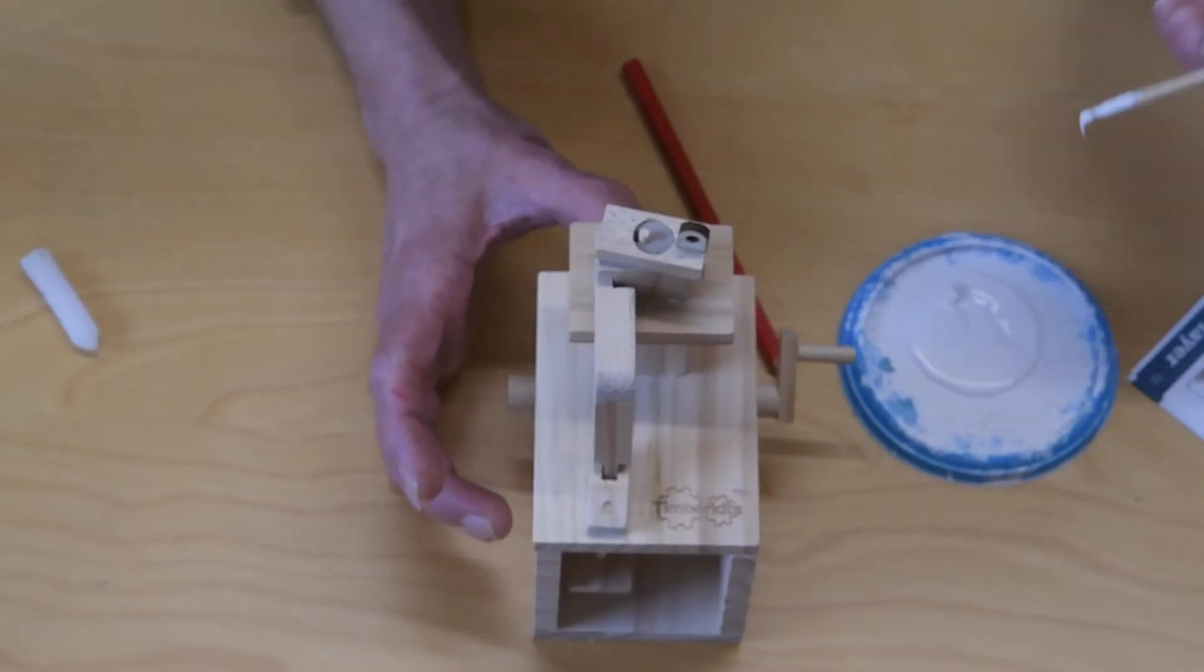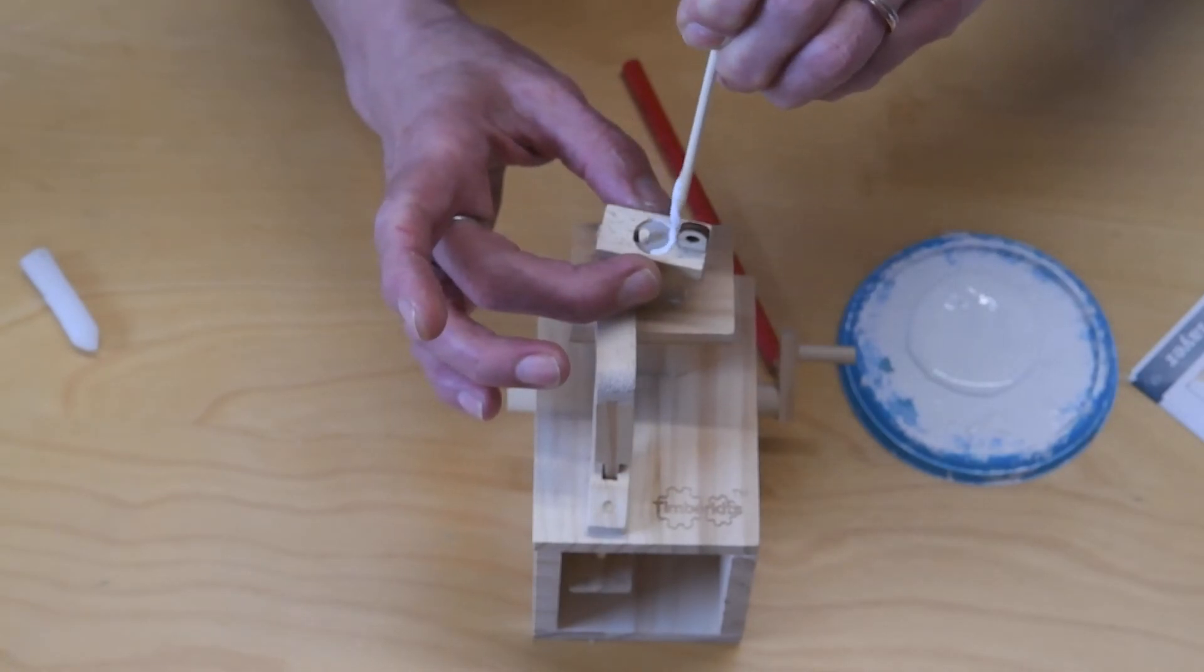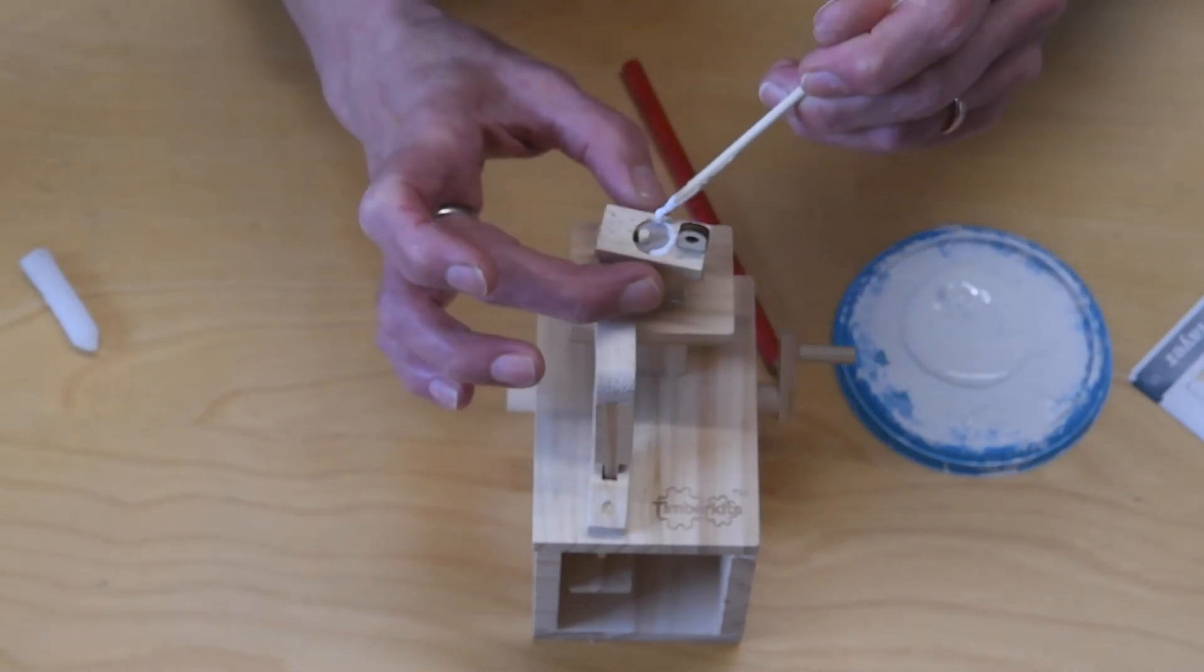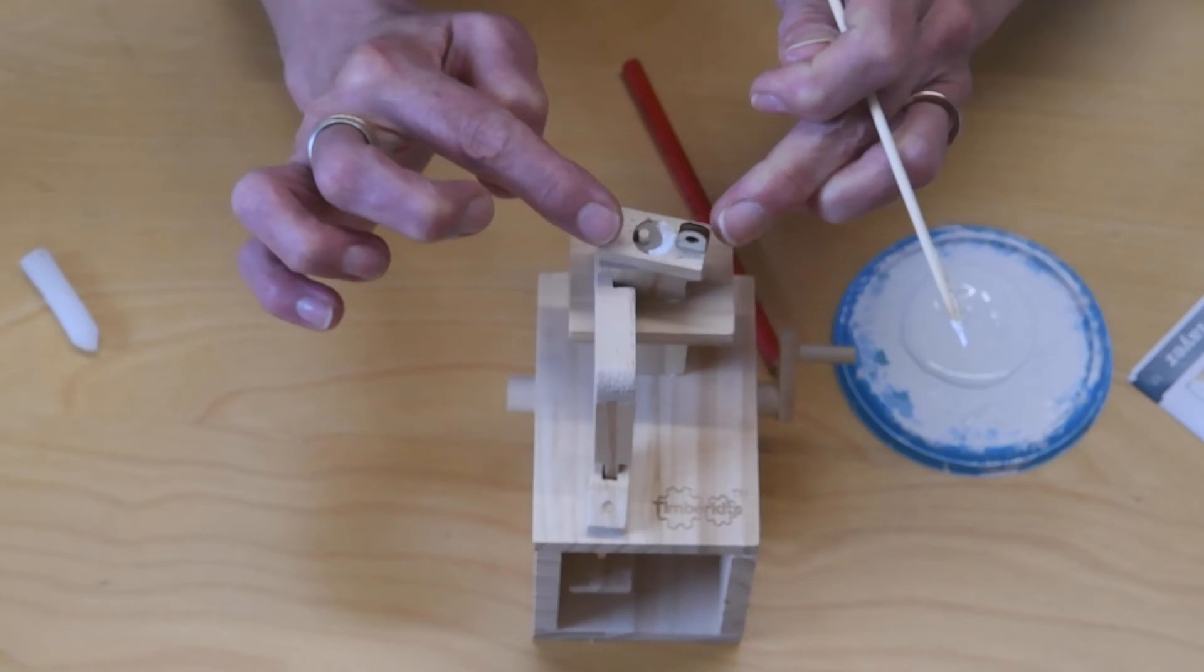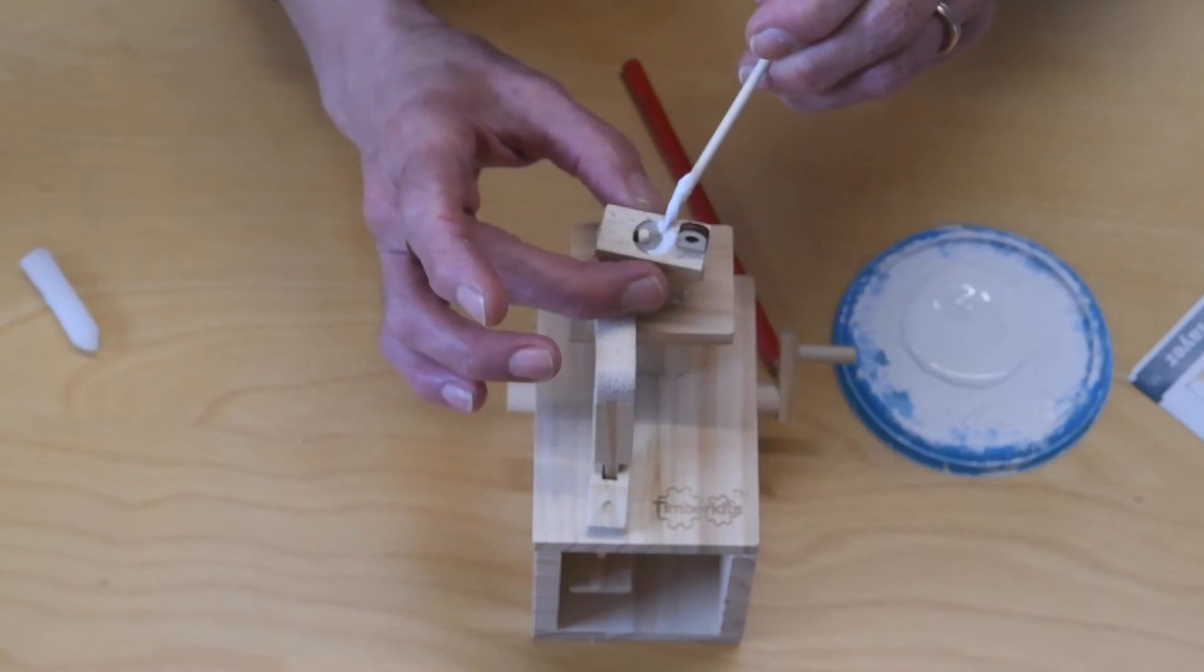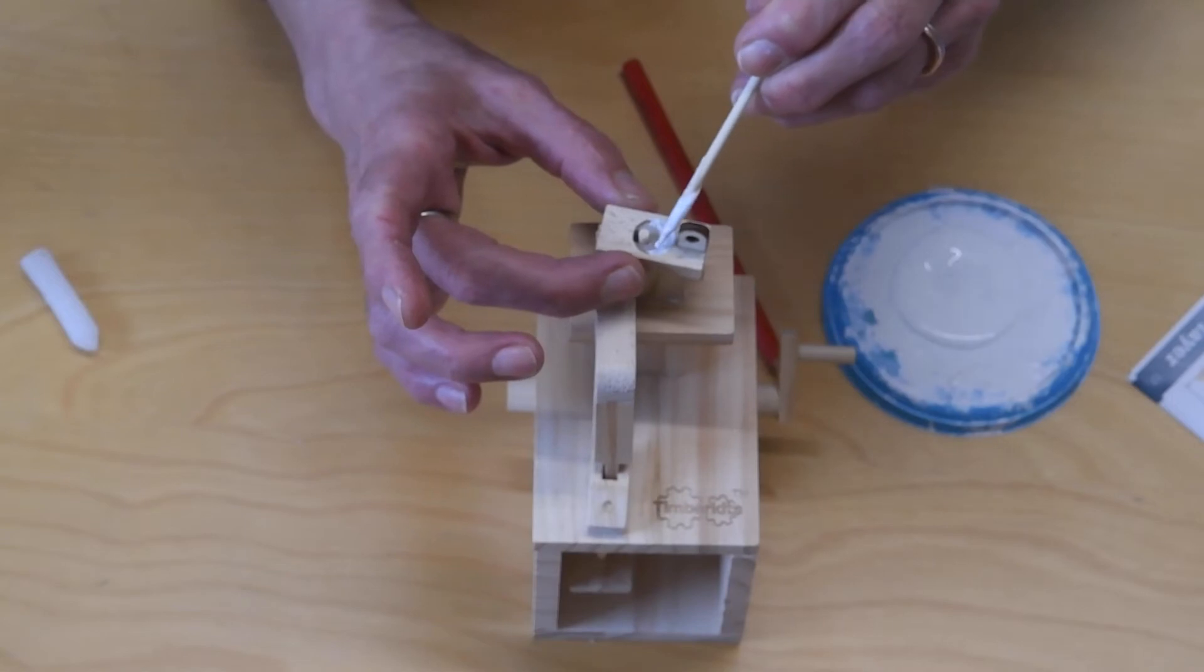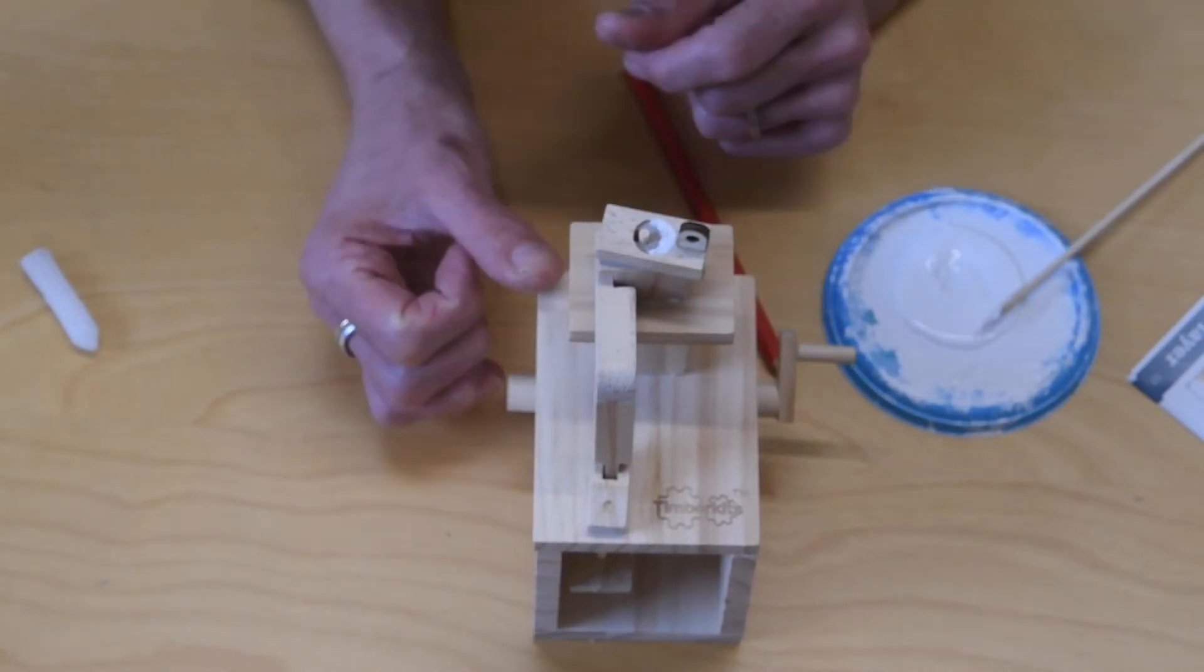And then we glue inside this lip here. The dowel is slightly lower than the surface of this part and we just fill that gap with glue, creating a sort of crescent shape of glue, and leave that to dry very thoroughly.